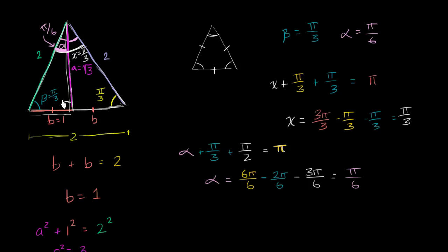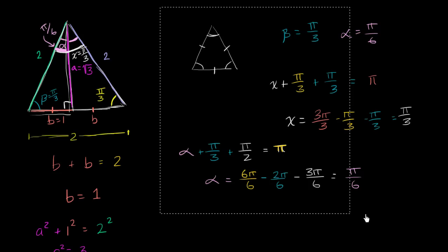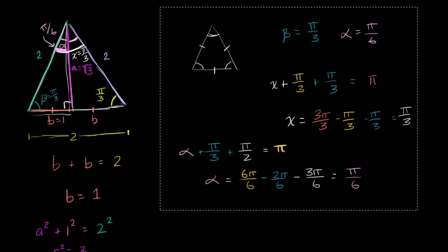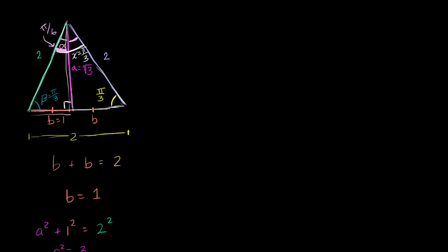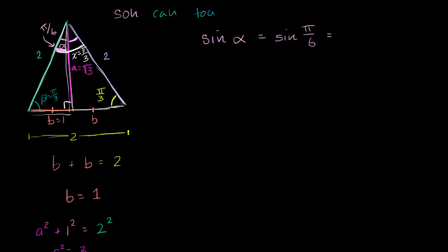Now let's find the sine, cosine, and tangent of alpha. The sine of alpha equals the sine of pi over six. Using SOHCAHTOA — sine is opposite over hypotenuse — the opposite side for this angle is one and the hypotenuse is two, so sine of pi over six equals one half.